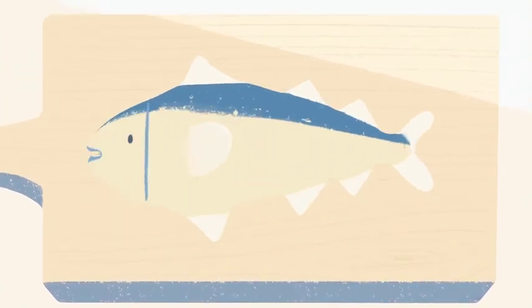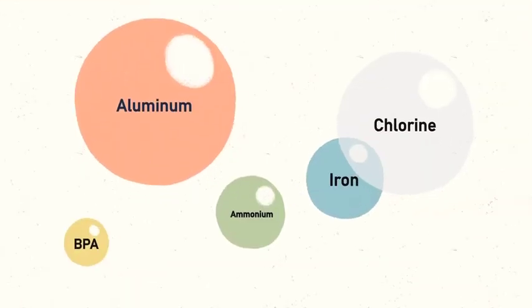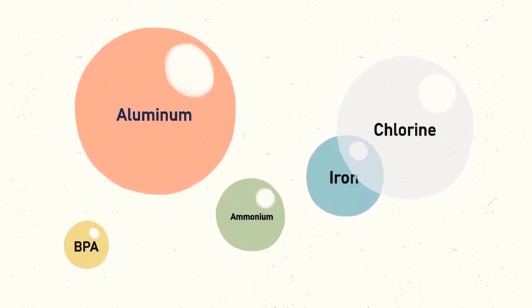From statistics of AMAP, there are several kinds of pollution in the Arctic Ocean and in the fishes including aluminum, chlorine, iron, ammonium, and BPA.